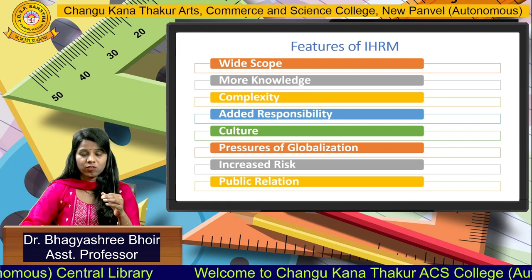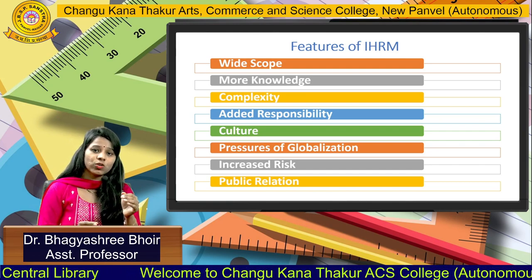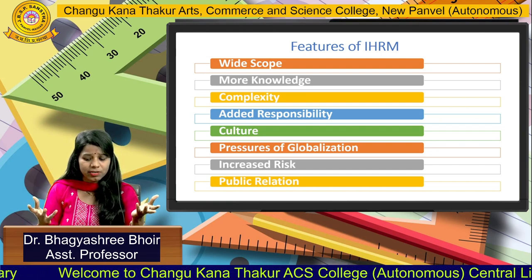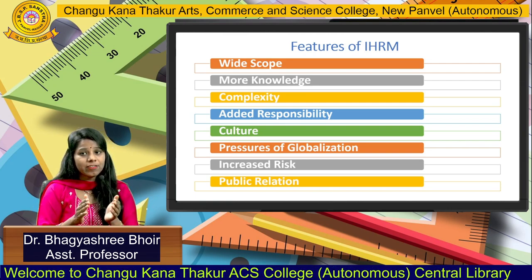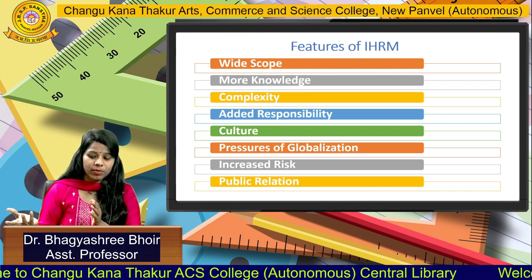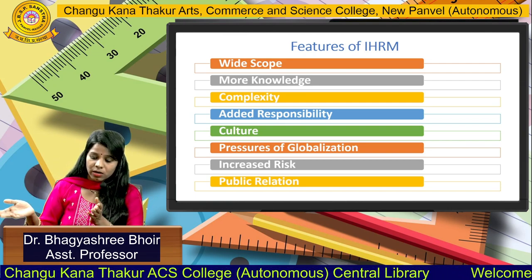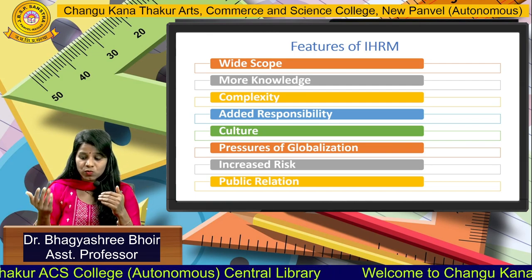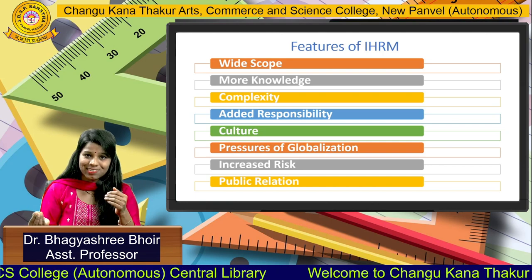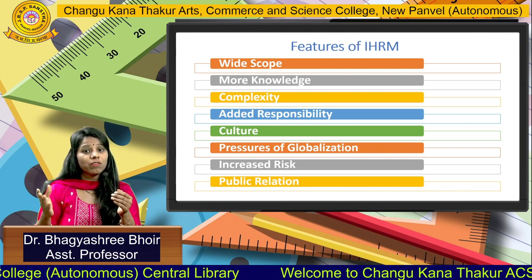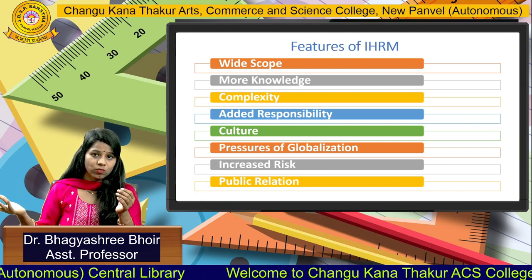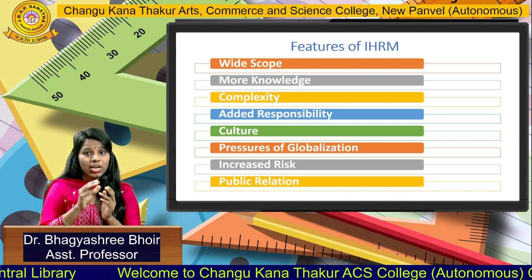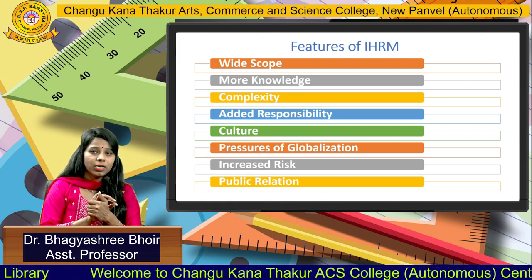Next is added responsibility. Not only does he have to recruit employees from different countries, but he has to handle their family requirements also. He has to deal with the housing of expatriates, the schooling of their kids, and the spouse's requirements also. So these are the added responsibilities that this HR person has to handle.